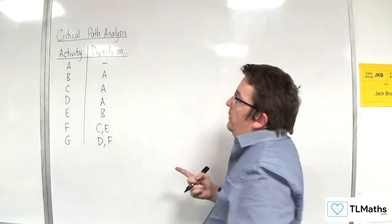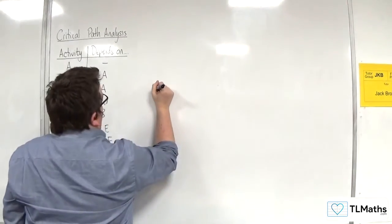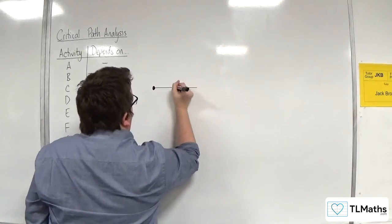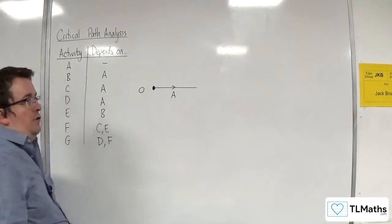We start off with A doesn't depend on anything. So first of all, we're just going to have the edge A coming out of the source node, labelling it 0.